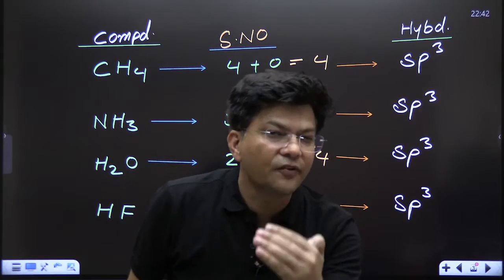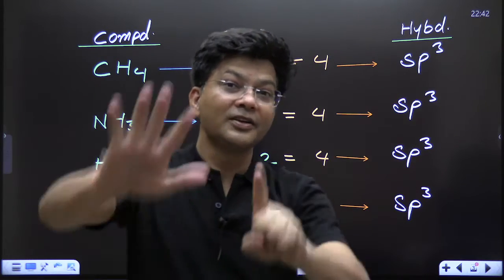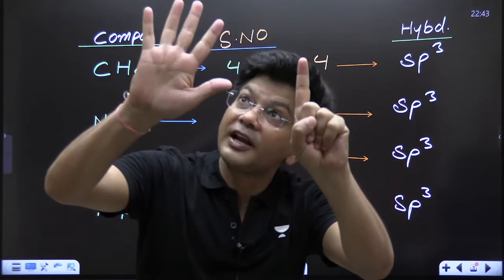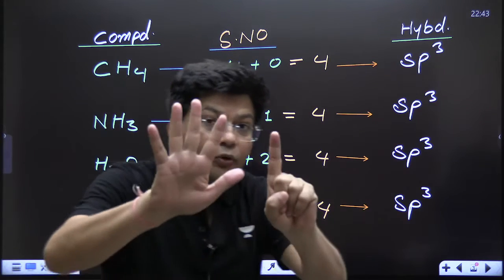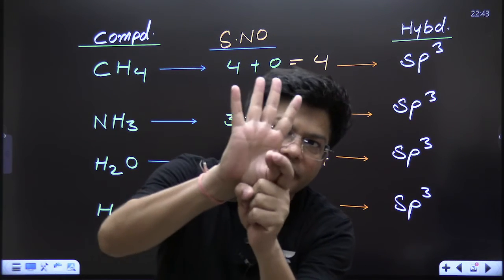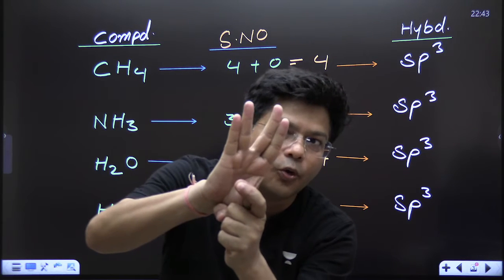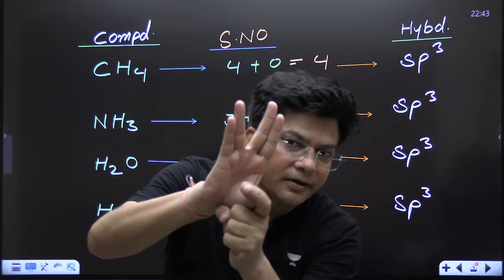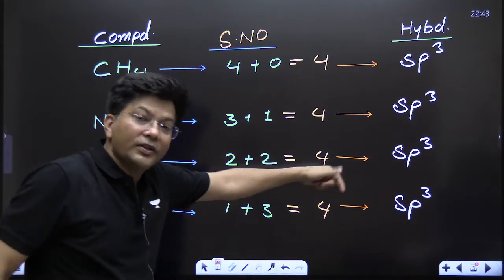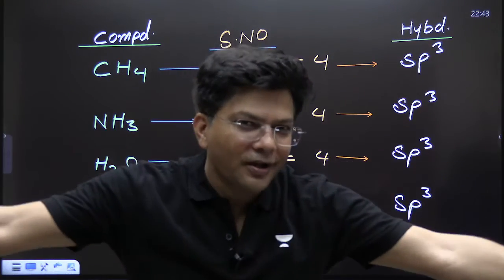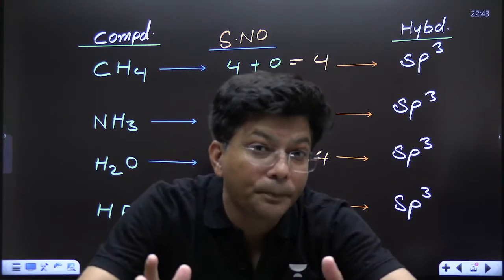Now oxygen — oxygen, sulfur, selenium, tellurium, polonium — oxygen is in group 16, six electrons. Two hydrogens form two sigma bonds; six minus two = four electrons left, meaning two lone pairs. Two sigma bonds + two lone pairs = four → sp³. It's just amazing!